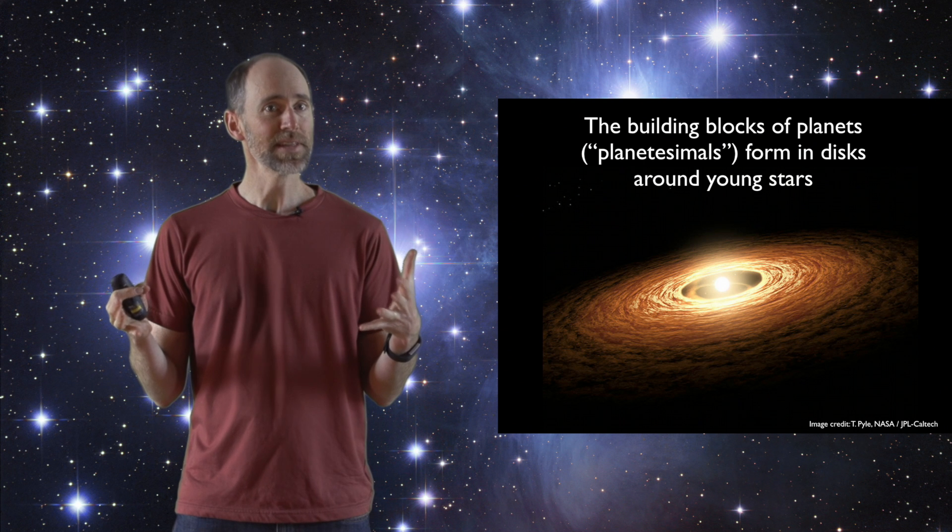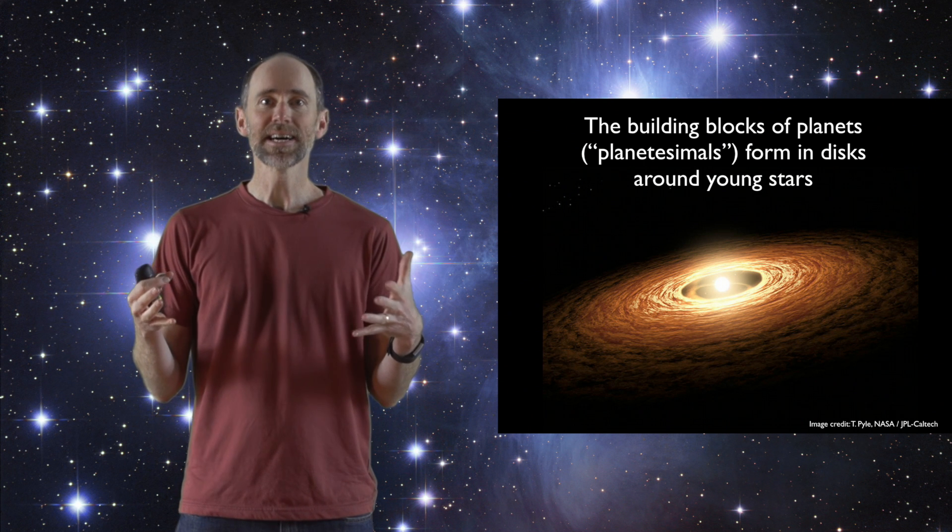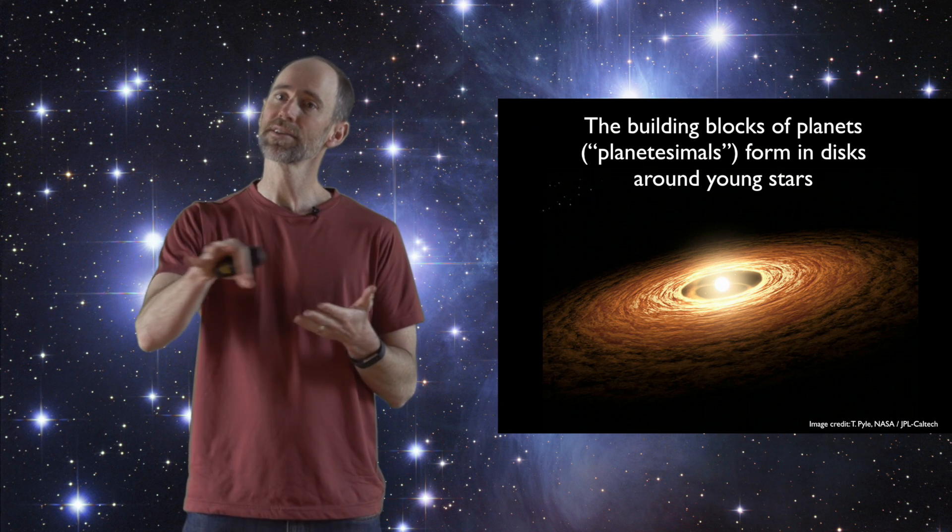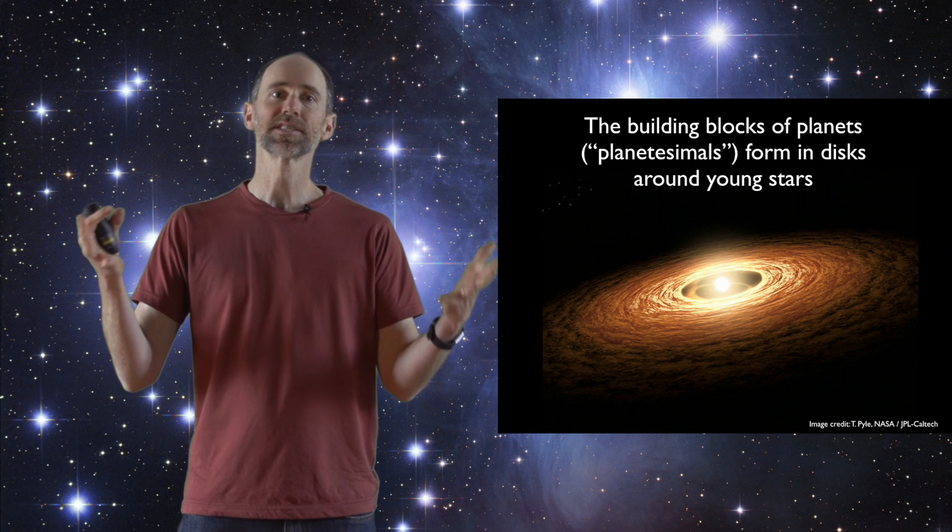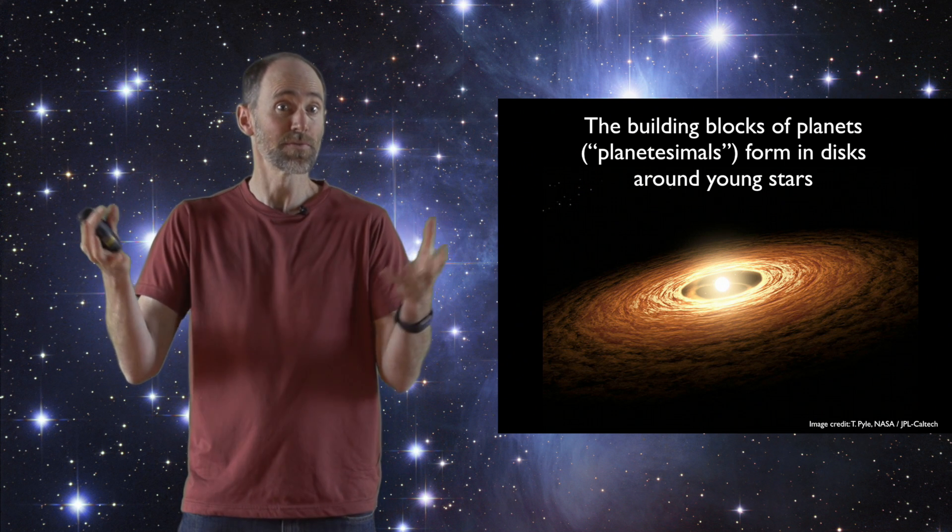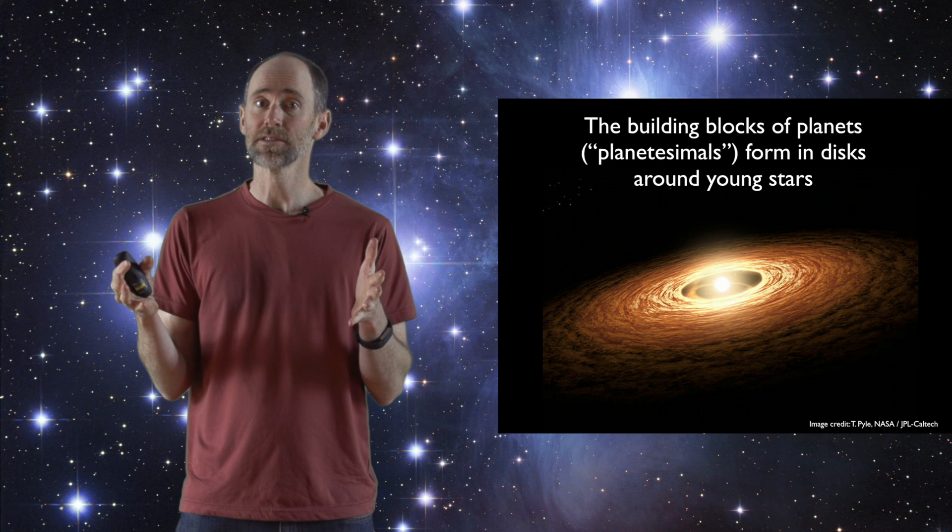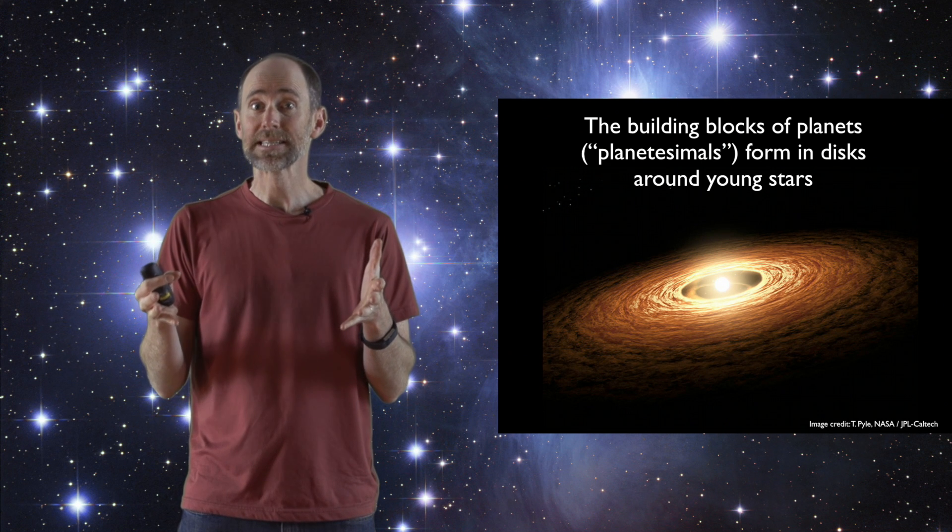So as we've talked about in other videos, we think that planetesimals form in disks around young stars. There's not enough stuff in between stars to form these large objects, so they have to form in the dense region of a planet forming disk.